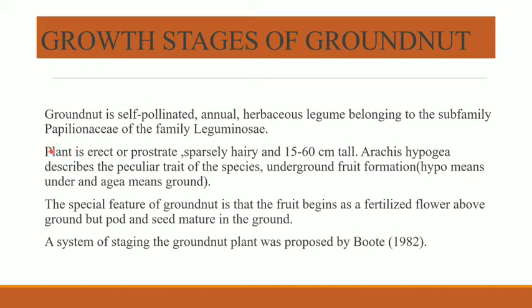The groundnut plant is erect or prostrate, sparsely hairy, and 15 to 60 centimeters tall. The groundnut scientific name is Arachis hypogaea, which describes a particular trait of the species. The meaning of Arachis hypogaea: 'hypo' means under, 'gaea' means ground — describing growth below the ground.